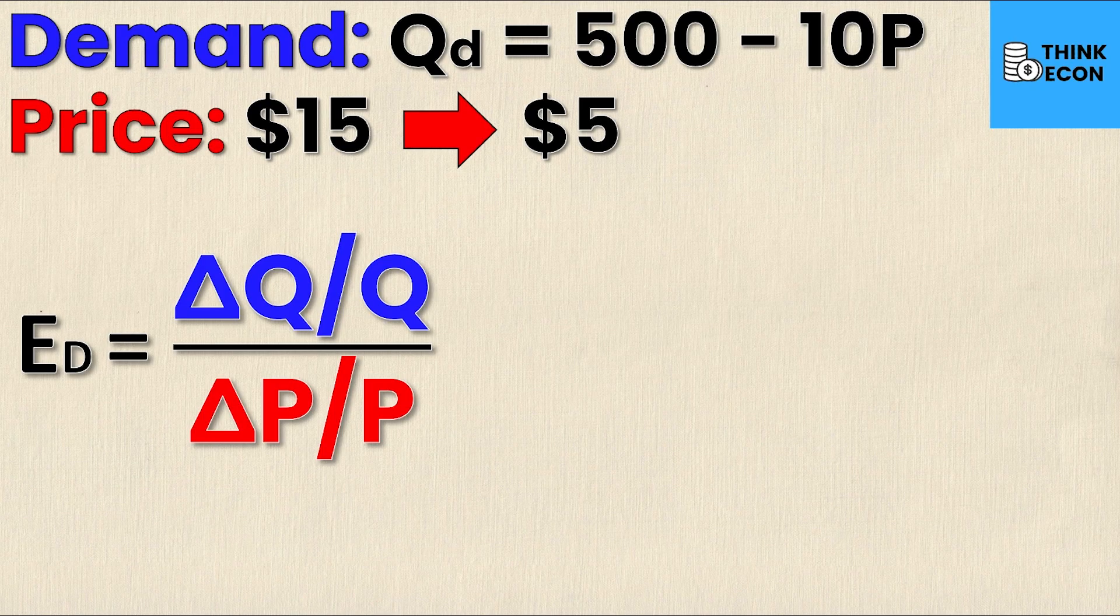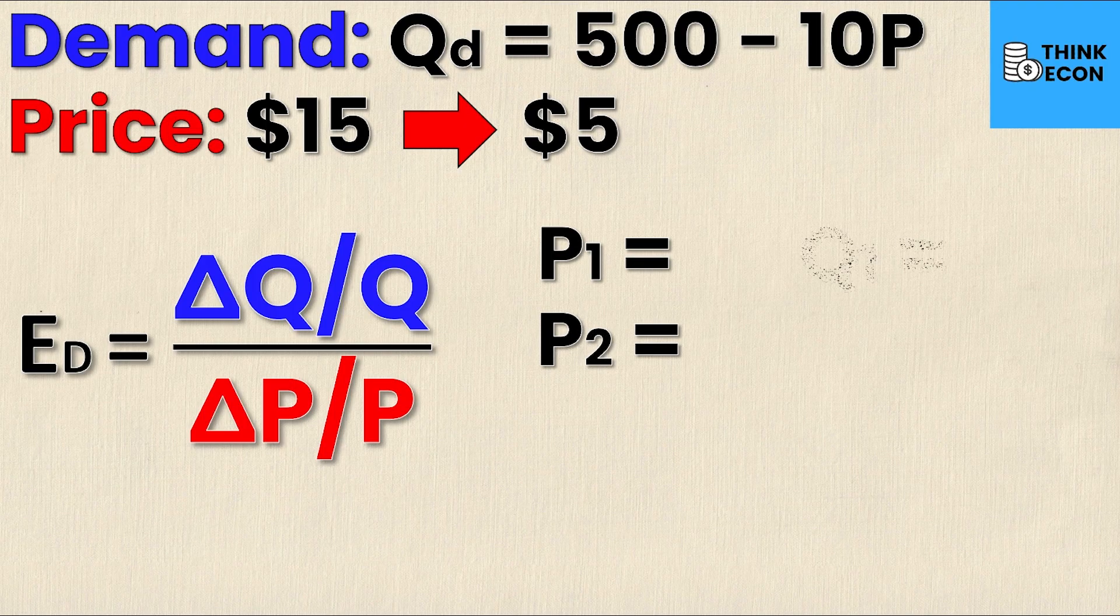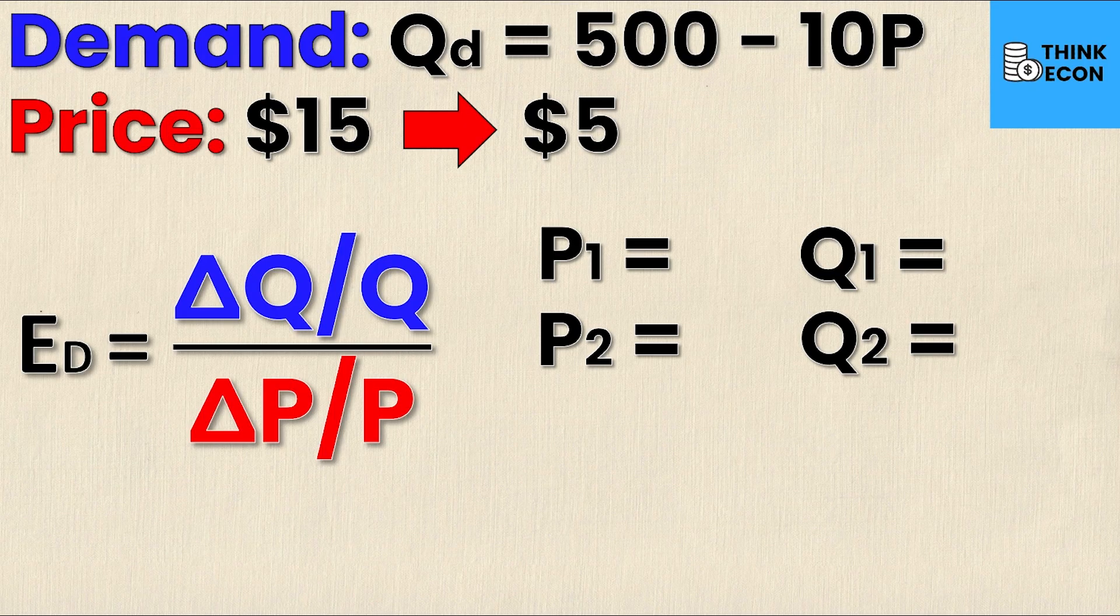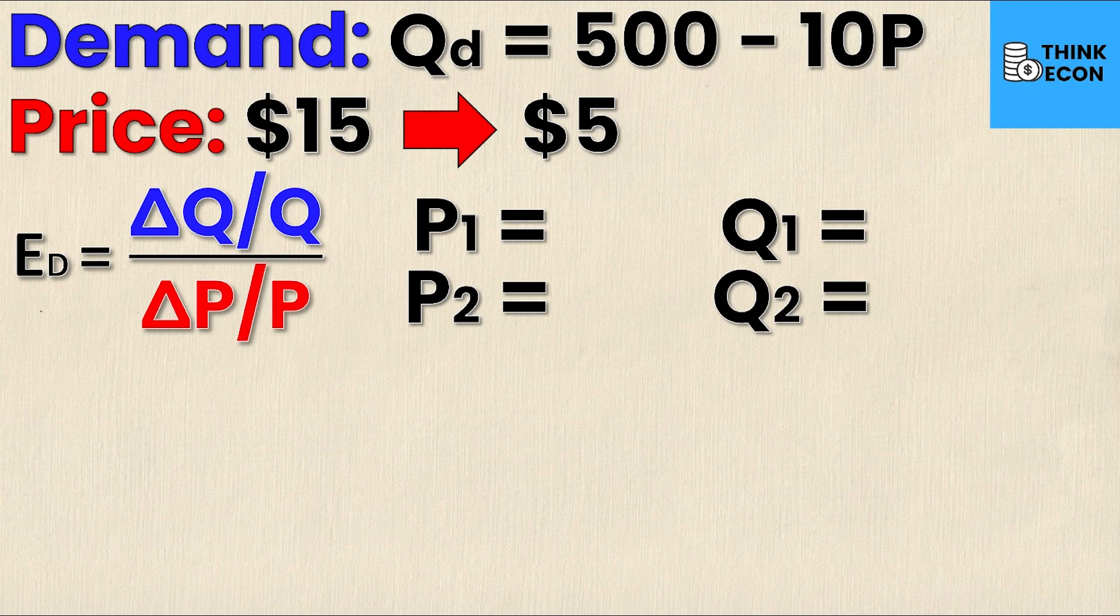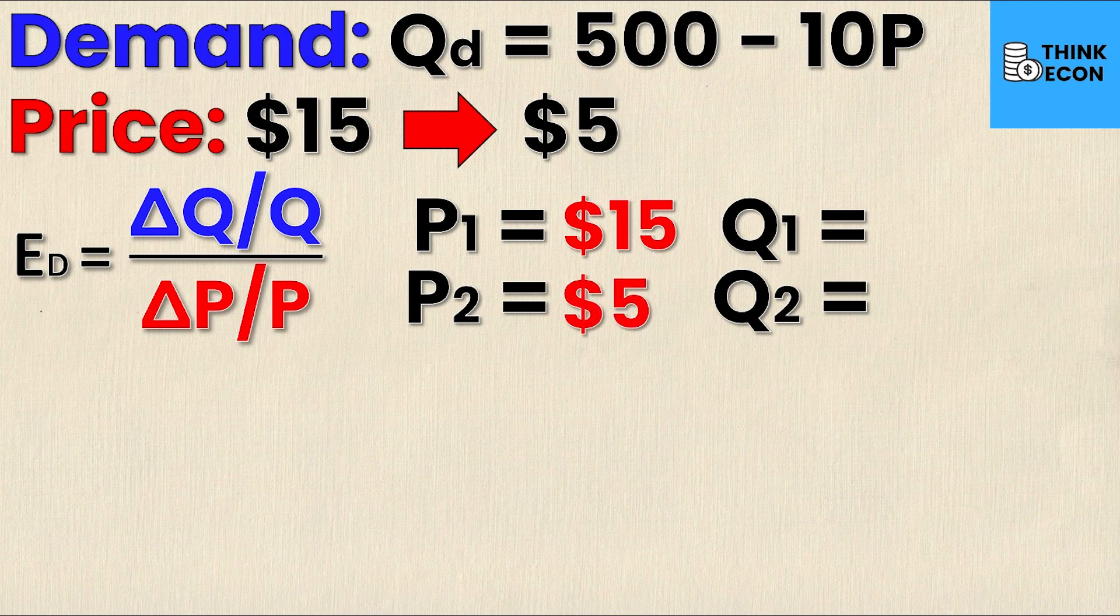So what I teach my students is to then take note of all of the information that I need to know: my P1, my P2, my Q1, and my Q2. This is essentially my original price, my new price, my original quantity and my new quantity. Now you might notice right away that I have some information that's given to me right in the question—my original price and my new price. So let me fill those in first. My original price was $15, and you can see that's given to me in the question, and then my new price P2 is $5.